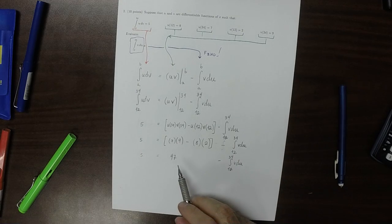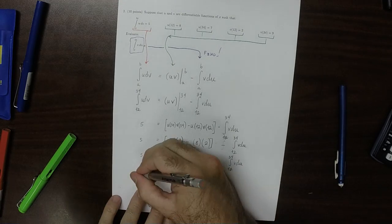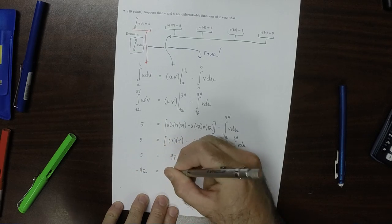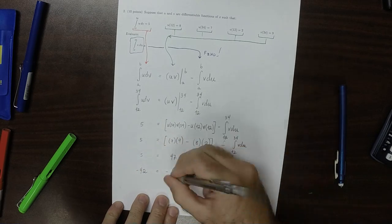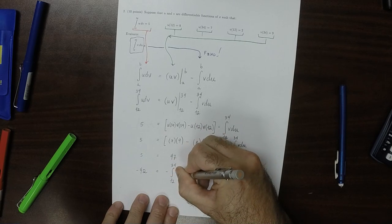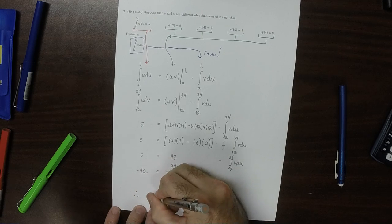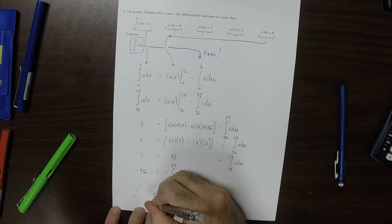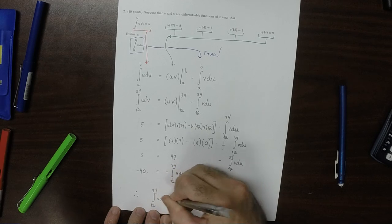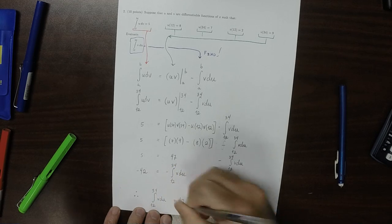Okay, then we can move the 47 to the other side, so negative 42 is negative the integral from 12 to 34 of v du. Therefore, the answer, the integral from 12 to 34 of v du is 42.